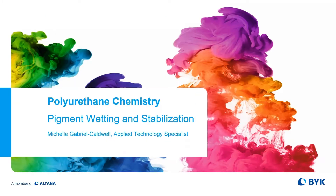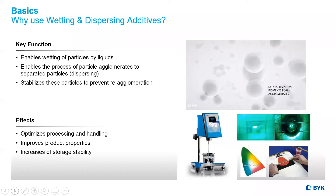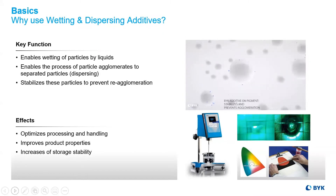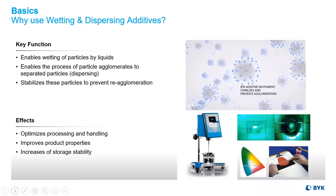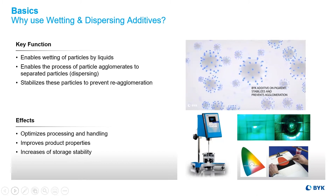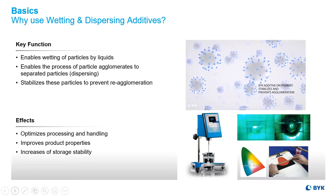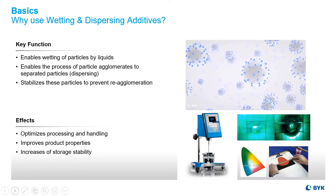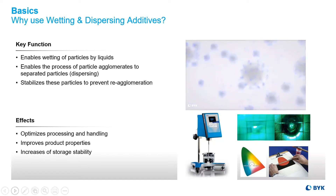Let's review the fundamentals of wetting and dispersing additives. The key functions are to wet the pigment particles, to aid in dispersion or the processing, and to improve or enhance stabilization. The effects of this will be to optimize the processing and handling of the coatings, as well as improving any properties.